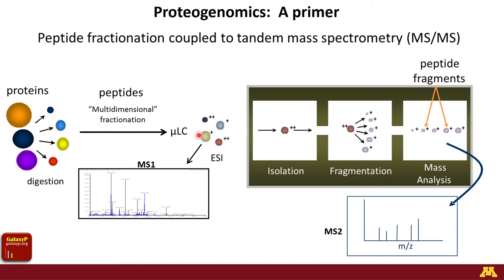As a primer: proteogenomics is based on mass spectrometry-based proteomics data using shotgun proteomics. This is the technology and method used to generate mass spectrometry data. We take protein samples that are complex mixtures of proteins, digest these into peptides, and these peptide mixtures are then fractionated and separated using liquid chromatography, such that peptides elute from the column and are introduced directly into a mass spectrometer. They are ionized and put into the gas phase. The different-sized peptides — made of amino acid sequences with slightly different sizes and molecular weights — are first detected by the mass spectrometer.